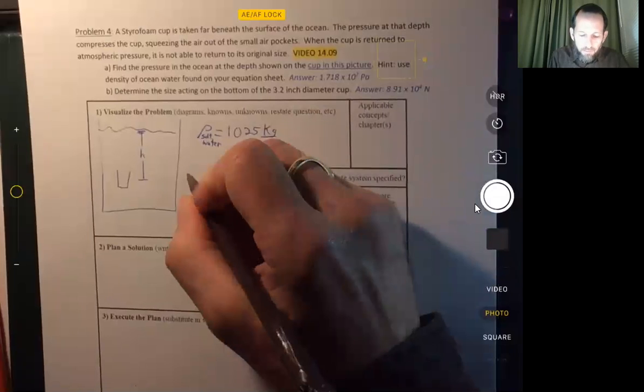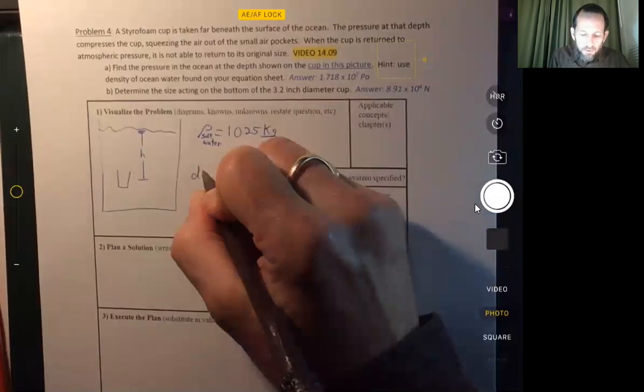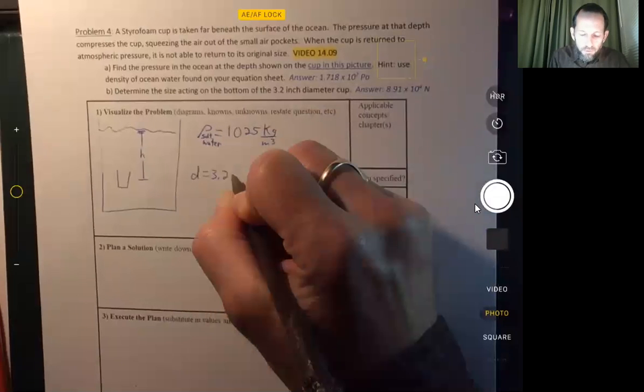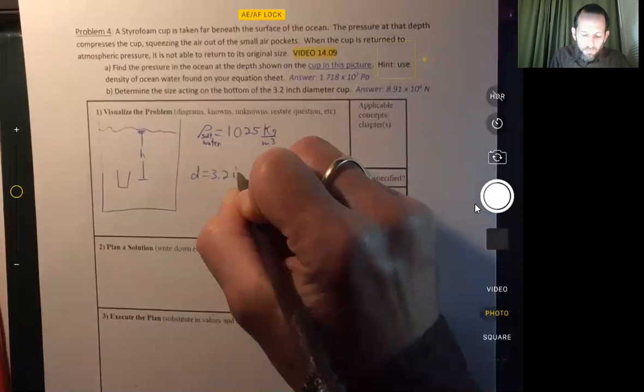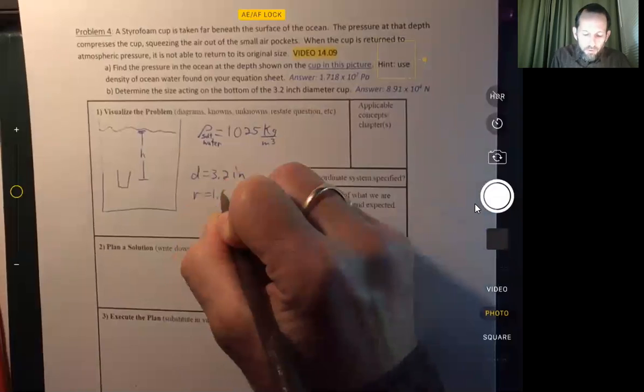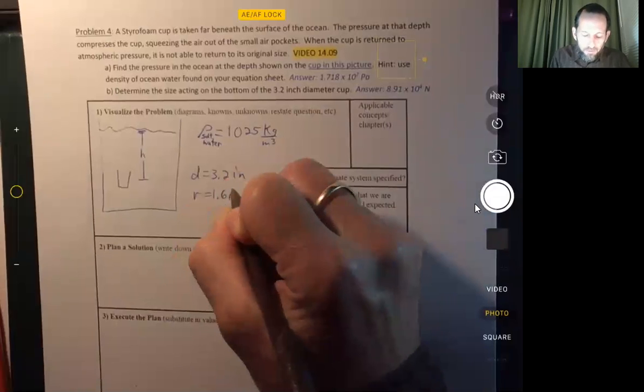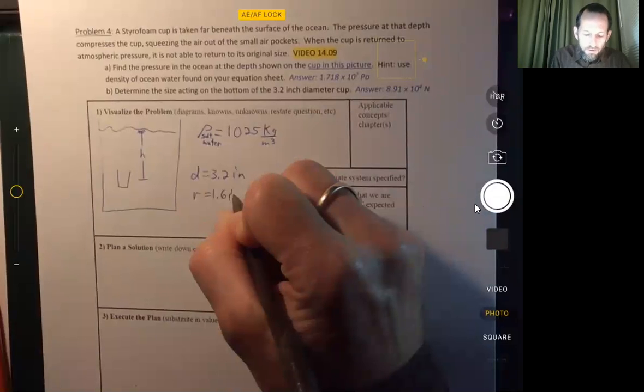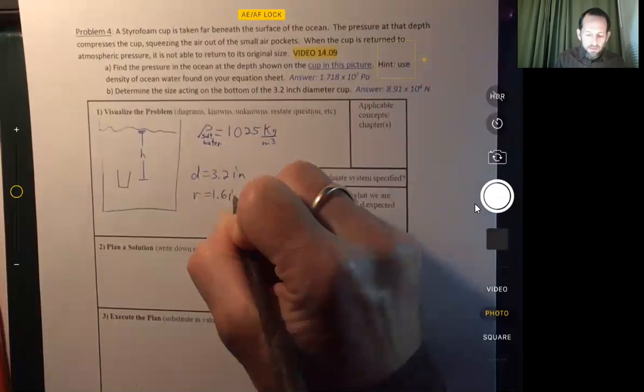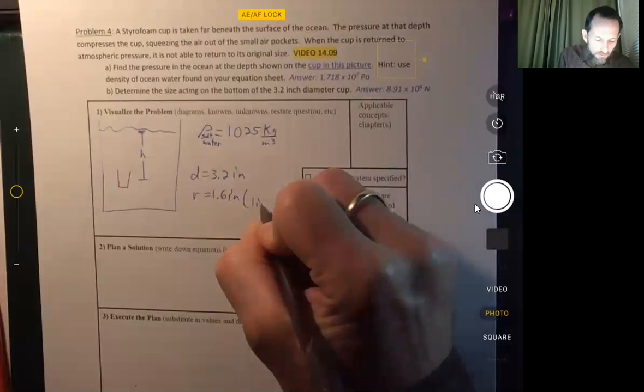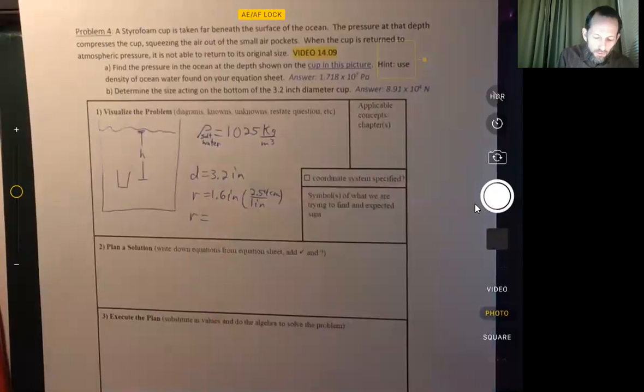We know the diameter of the cup. The diameter is 3.2 inches. That means the radius is 1.6 inches. And we also know there's 1 inch per 2.54 centimeters. And so the radius we calculate 1.6 times 2.54. So that's 4.064 centimeters.